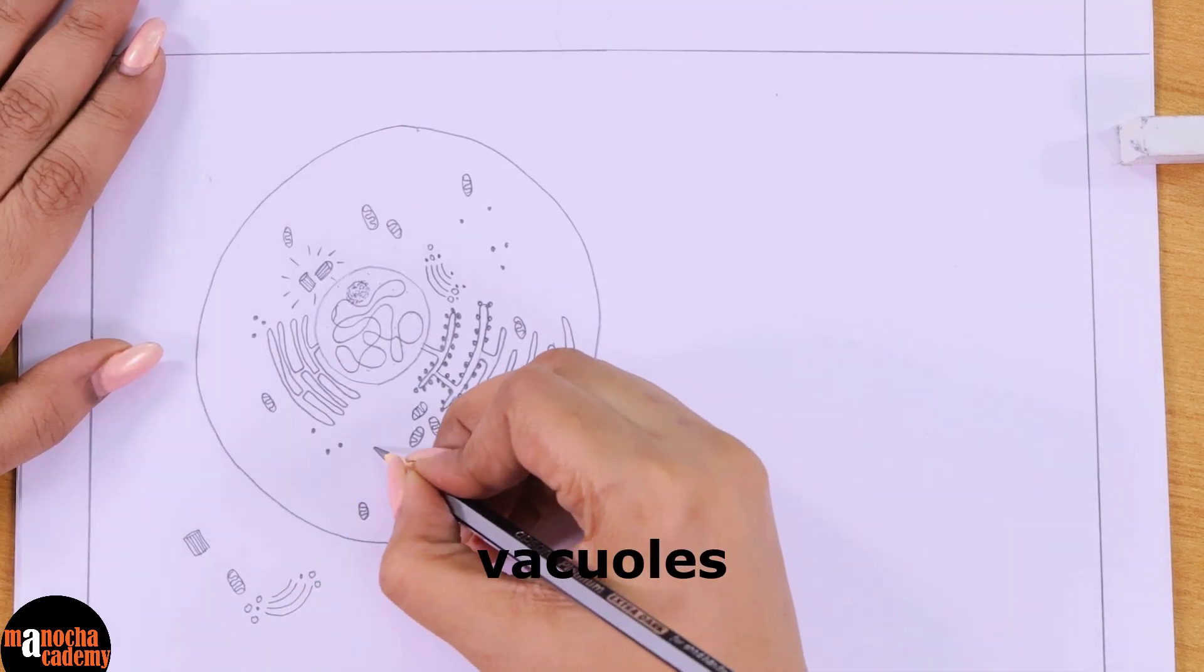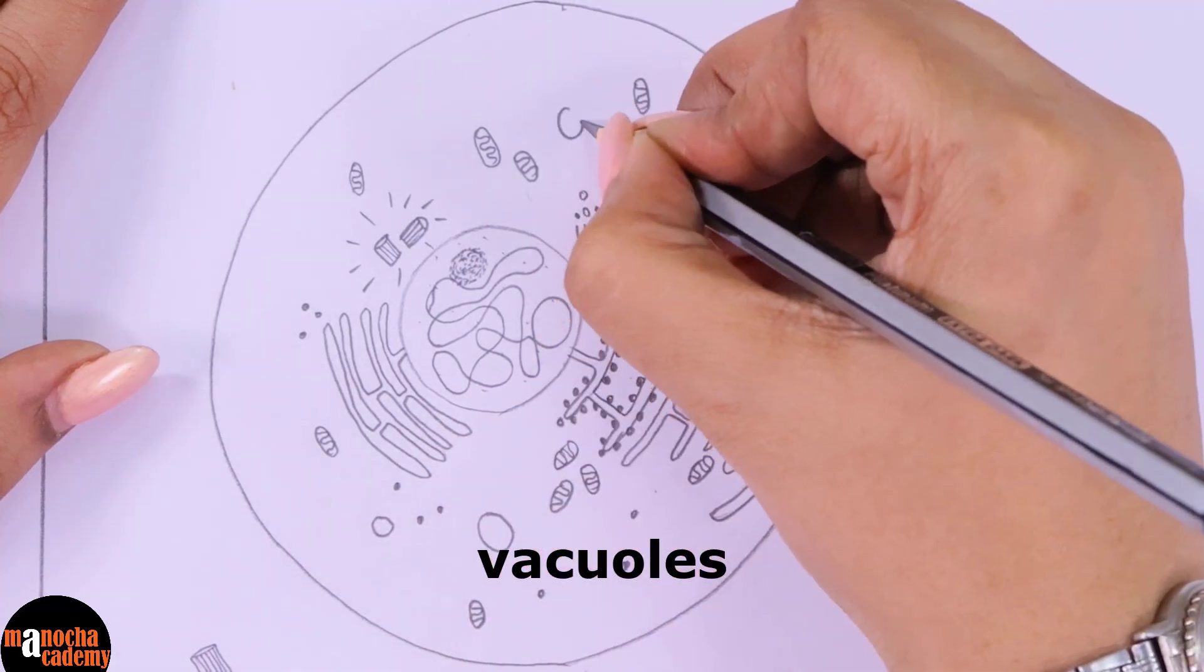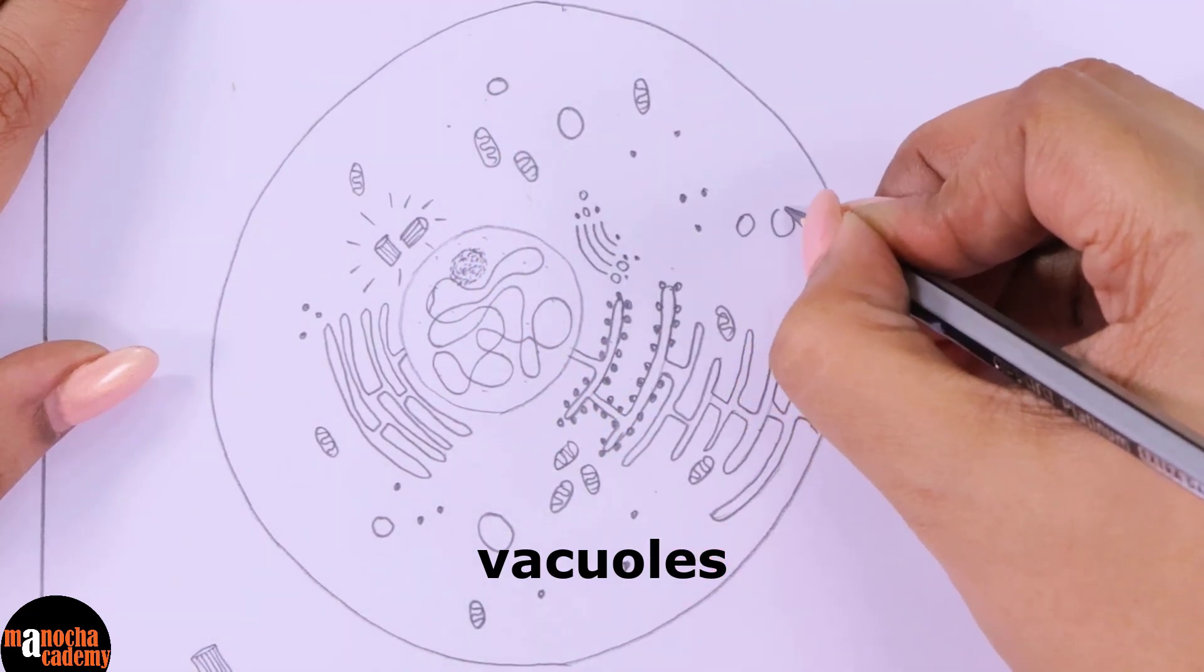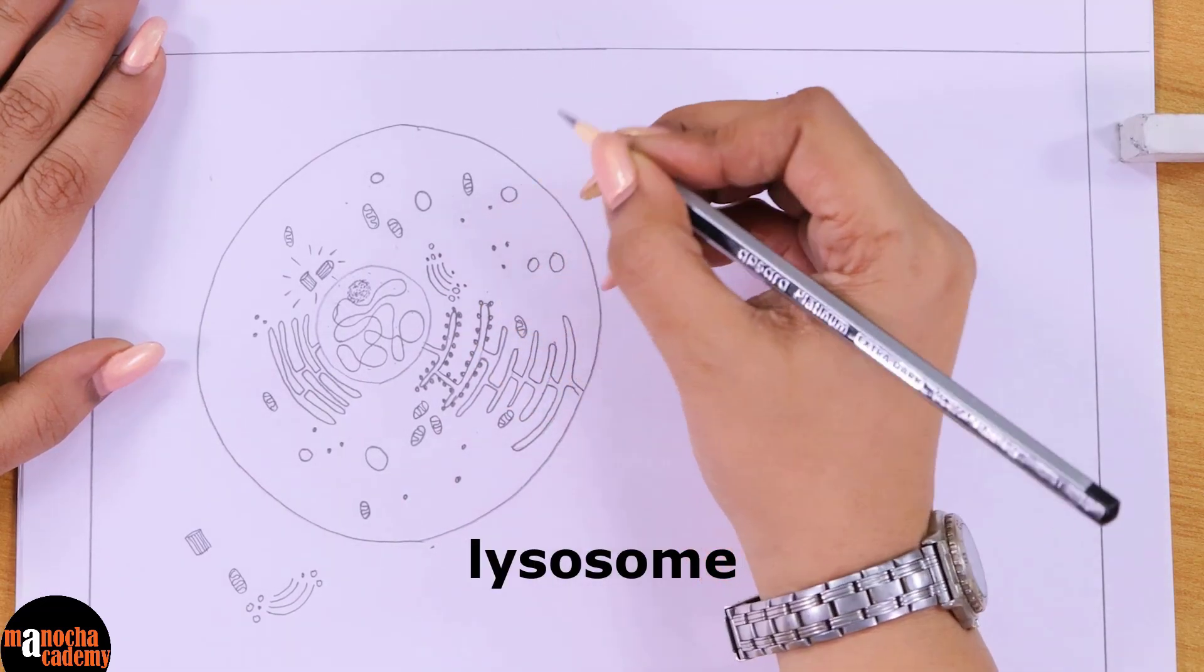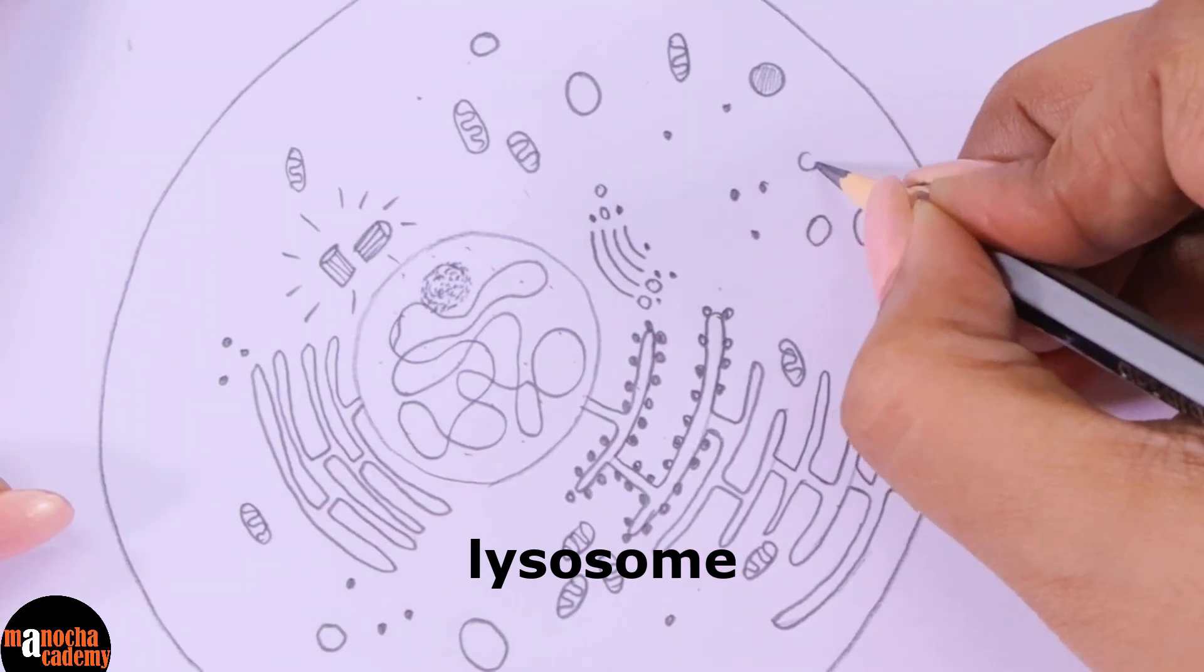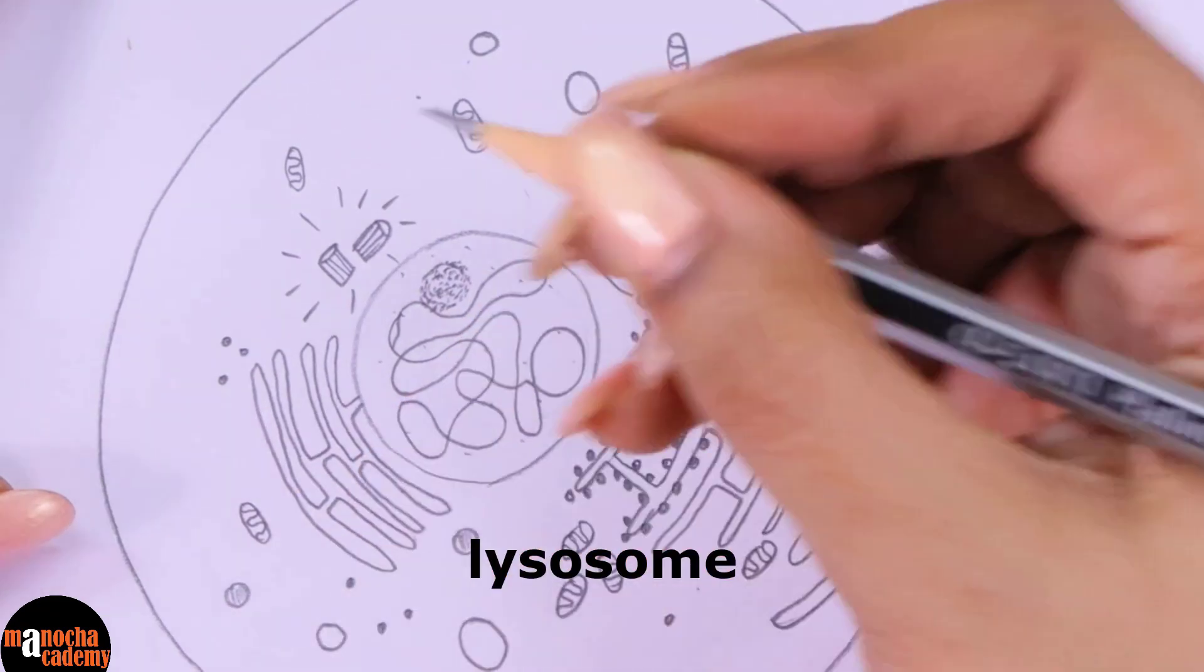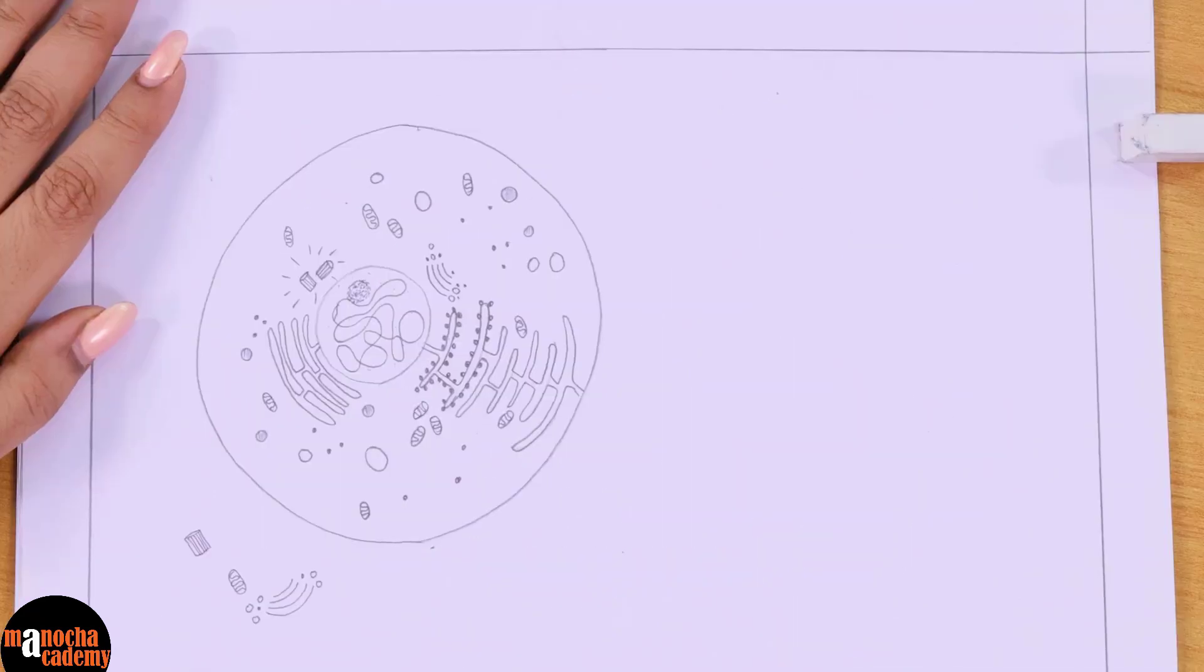Now we will draw a few vacuoles. Vacuoles in case of animal cells are not that big. So do not draw too many vacuoles or very big vacuoles. You can draw a few vacuoles which are small in size. But we will also draw some lysosomes. Now for lysosomes and to make it distinguishable from vacuoles, we will just shade the lysosomes. Lysosomes can be of any shape and size. But we will just shade it to make it distinguishable from the normal vacuoles.